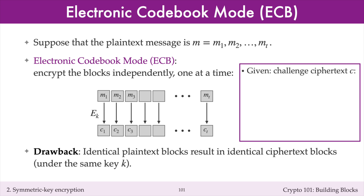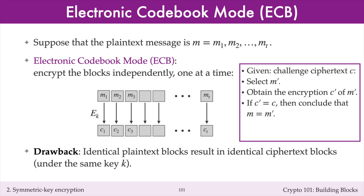To see why this is the case, suppose that the adversary has a challenged ciphertext C of length T blocks. The adversary would like to learn something about the plaintext M that corresponds to C. This adversary selects the plaintext M-primed of block length T, and obtains from Alice the encryption C-primed of M-primed. Now, if C-primed equals C, then the adversary concludes that M equals M-primed. In either case, the adversary has learned something about the unknown plaintext M, namely whether it equals M-primed or not, and thus the adversary has broken semantic security.